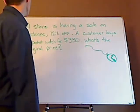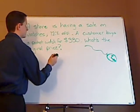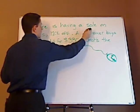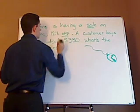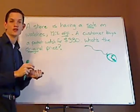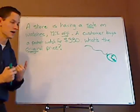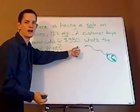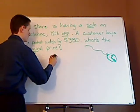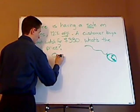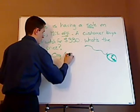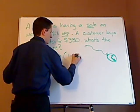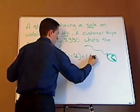Alright, first notice that you're looking for the original price and it's having a sale. This is 12% off. So you're subtracting off the original amount. Also, you're looking for the original amount. You found the new one. So let me set up the equation you have for the original.